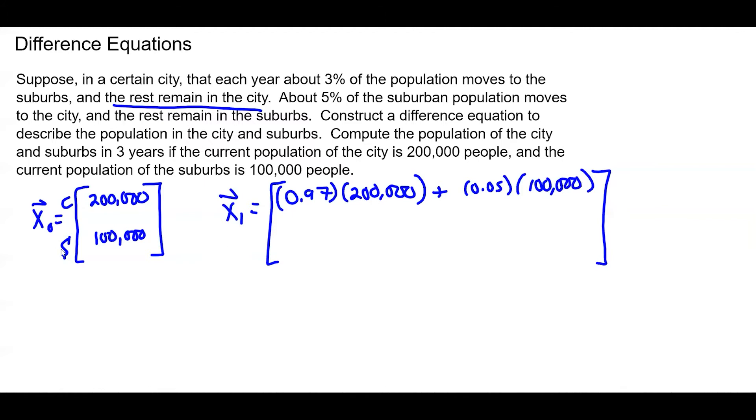We'll do this again for the suburban population. So if 5% leave, then 95% stay. So 95% of that 100,000 are going to stay. And they're also going to gain people from the city that are going to move to the suburbs. And this tells us that about 3% are going to move to the suburbs. So this will be my suburban population.